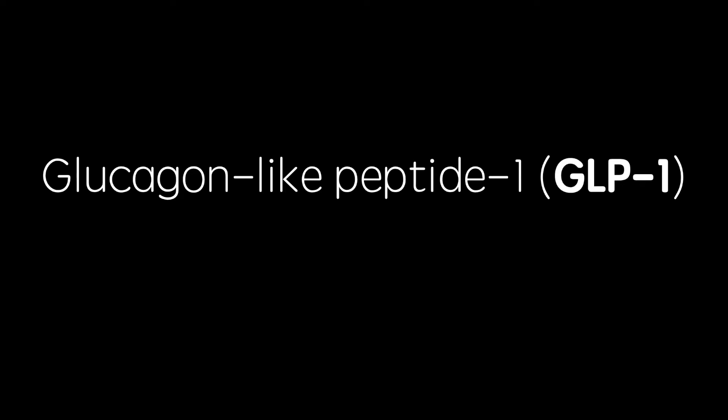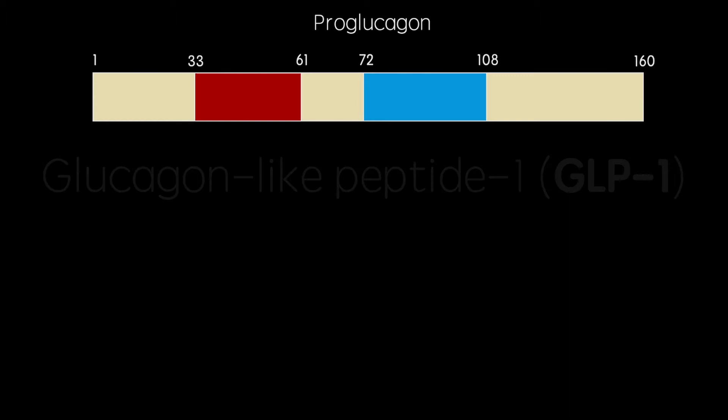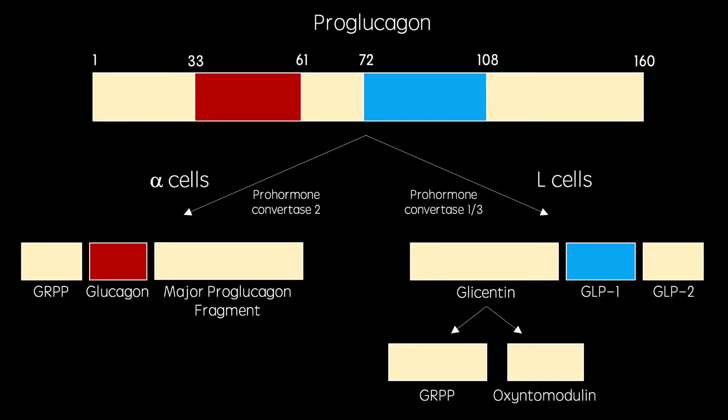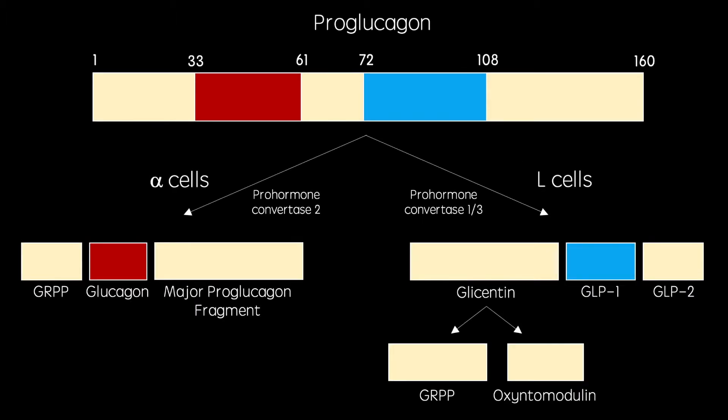GLP-1, or glucagon-like peptide 1, is a protein synthesised from pro-glucagon in the enteroendocrine L-cells in the ileum and colon. When nutrients are absorbed in these areas of the gastrointestinal tract, GLP-1 is released into the blood.